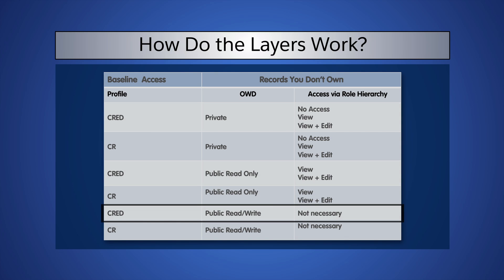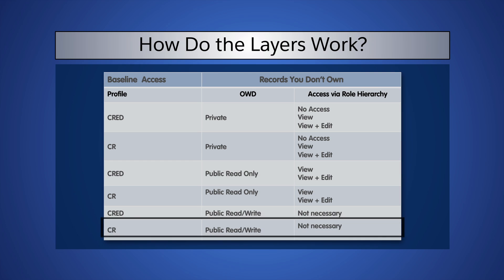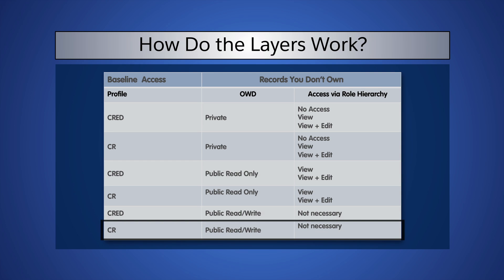If Alan's profile grants full permissions and the org-wide defaults are set to Public Read Write, then the role hierarchy is not necessary. Alan already has access to all opportunities through his profile and the org-wide defaults. If we change Alan's profile to grant only Create and Read, and the org-wide defaults are set to Public Read Write, then he has access to all opportunities but only the ability to read them, since neither the org-wide defaults nor the role hierarchy can grant more permissions than the profile.